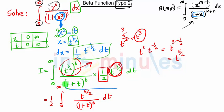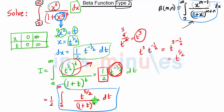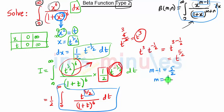Now if you compare this equation with this equation, both these equations are similar. Here the variable is x, here the variable is t. So when we compare the numerator we get m minus 1 equal to 5 by 2, which means m is nothing but 7 by 2.